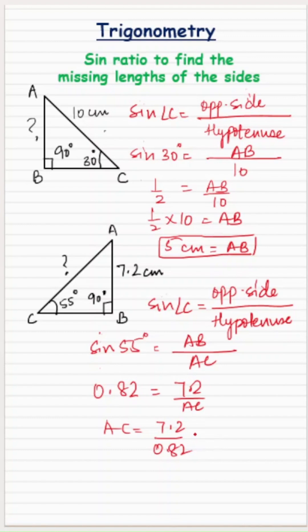When you divide 7.2 with 0.82 up to two places of decimal, the answer will come out to be 8.78 centimeters. That's all. Bye-bye.